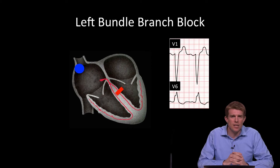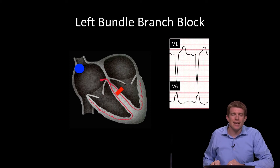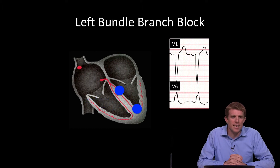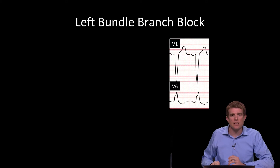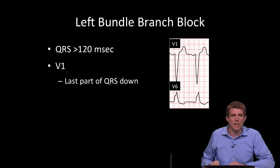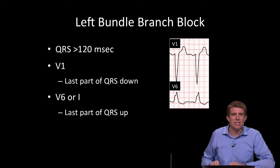So what we'll see on ECG is that our detector V1 is by the right side and our detector V6 is by the left side. The last part of the QRS is going down in V1 and coming up in V6. The last part of the depolarization of the ventricle is the electrical current going across from the right side to the left side — away from V1 going down, and towards V6. For a left bundle branch block, QRS duration is again wide, greater than 120 milliseconds, the last part of the QRS in V1 is down, and the last part of the QRS in V6 or lead 1 is up.